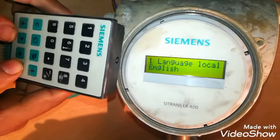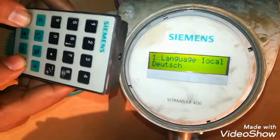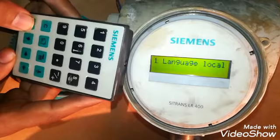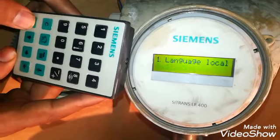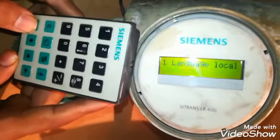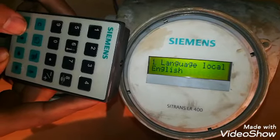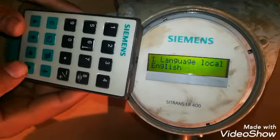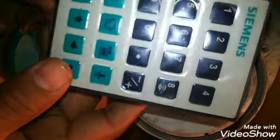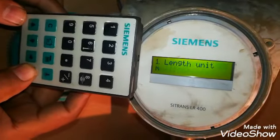Here you can see first parameter is language which is English. We can change it, Dutch or English. I will select English. With the right button I can save the parameter. This is the right button to save.